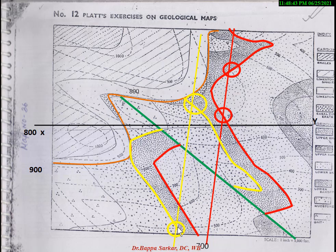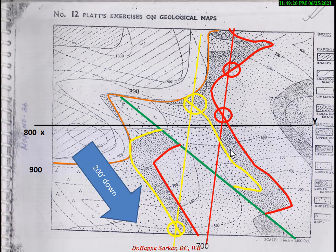You can see here it touches 500, so the difference is 300 — therefore the throw is 300 feet. If you want to know how to calculate throw or displacement in detail, go to my previous lecture where I clearly mention each and every point. So here the throw is 300 feet. This is the down-throw side and this is the up-throw side.